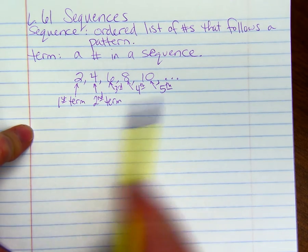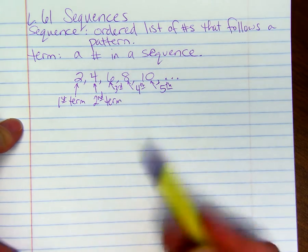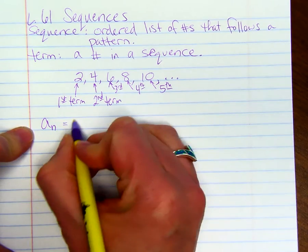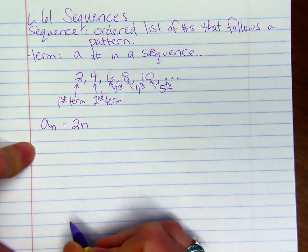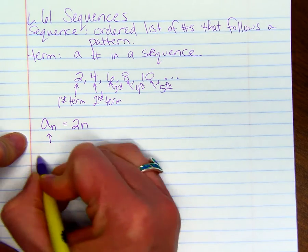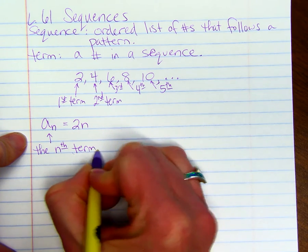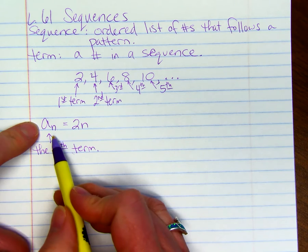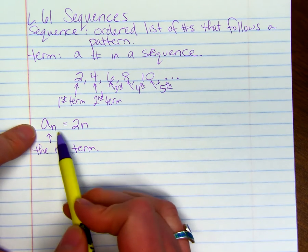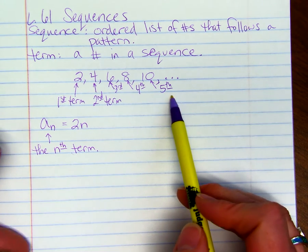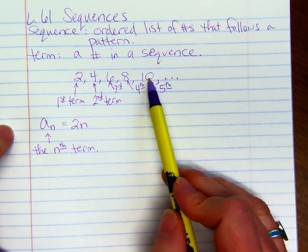We have a formula for this particular sequence: a sub n equals 2 times n. a sub n means the nth term. So if I want the fifth term, a sub 5, it's going to equal 2 times 5, or 10. And if you look at our sequence, the fifth term is 10.